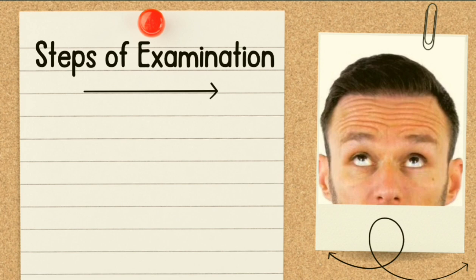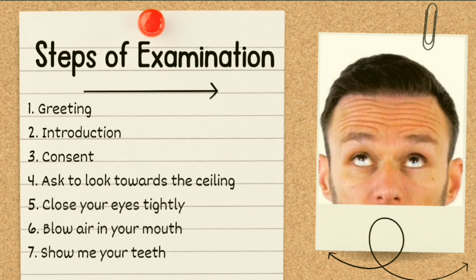Coming towards the steps of examination — whatever command you get in your medicine exam, start accordingly. The command can be: look at the face and examine neurologically, examine the lower six cranial nerves, examine the mixed motor and sensory cranial nerves, or simply examine the facial nerve of this patient and do the relevant examination.